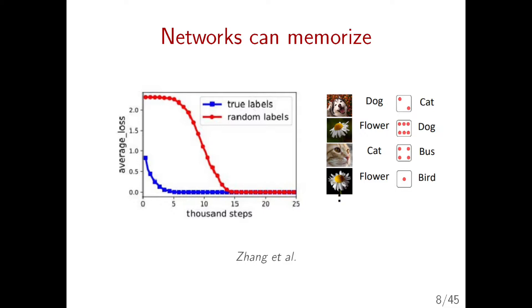First topic: memorization. Memorization was discovered at last ICLR by Zhang. We give a network images as usual, say CIFAR-10, but for each image we randomize the label — a dog gets assigned the class cat, a cat gets assigned bus — and we train on this dataset. The result: with true labels, the network optimizes happily and quickly. With random labels, it also dutifully optimizes and finds a solution. Both solutions reach zero loss or 100% accuracy. This raises the natural question: could our network just be memorizing? Are our networks any smarter than a nearest-neighbor lookup table?